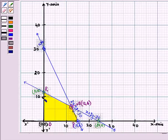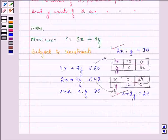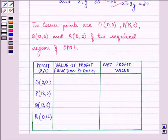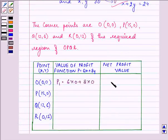Now we will be finding out profit on all these corner points. The value of the profit function at O is 6 into 0 plus 8 into 0, the answer coming out to be 0. For P, it is 6 into 15 plus 8 into 0, and the answer is Rs 90.